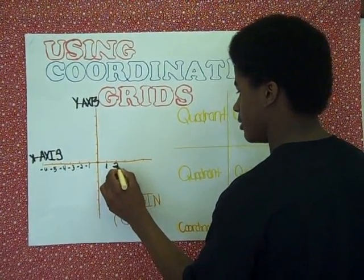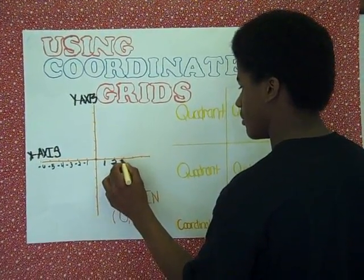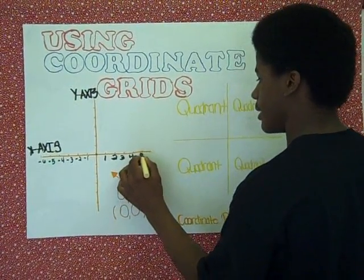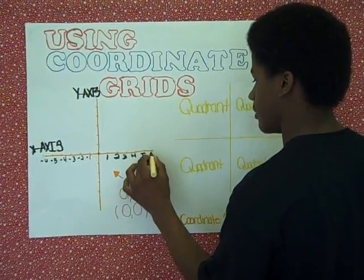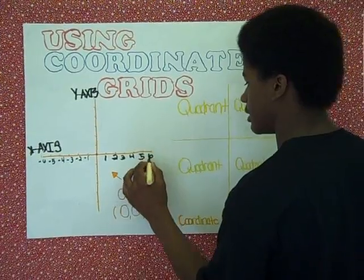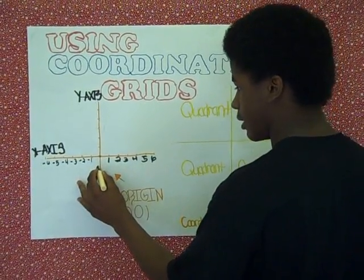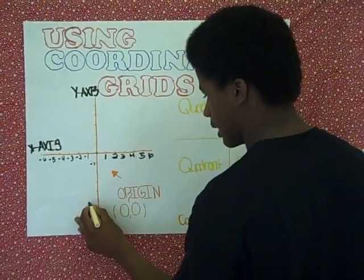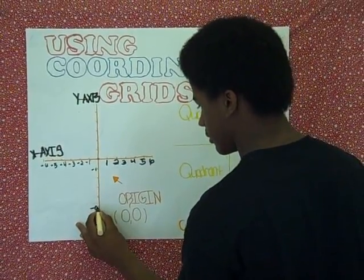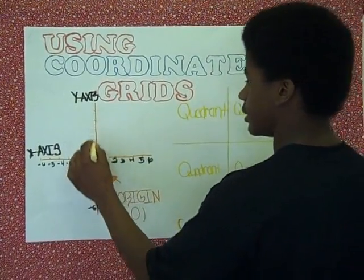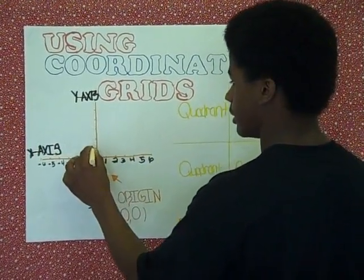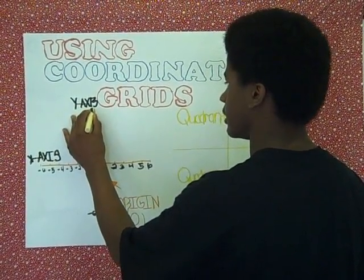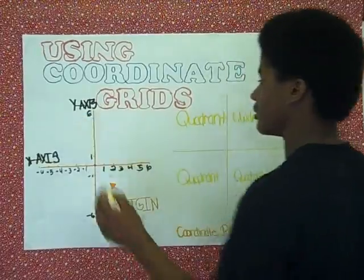Across from here is positive 1, positive 2, positive 3, positive 4, positive 5, and positive 6. Down here will be negative 1 all the way down to negative 6. This one up here will be positive 1 all the way up to positive 6.